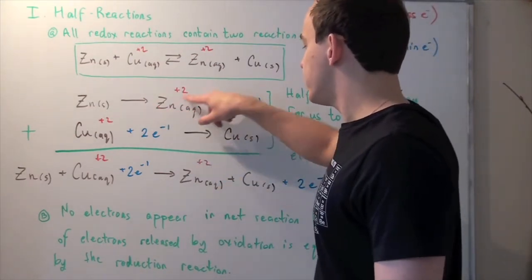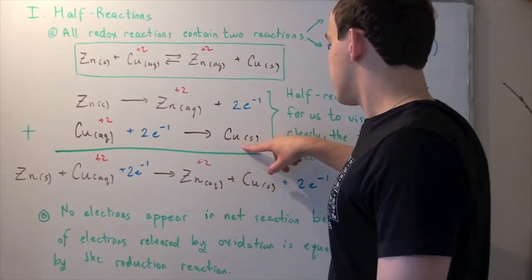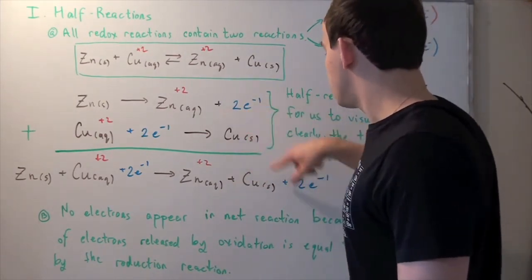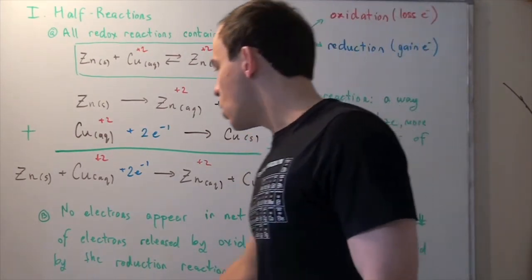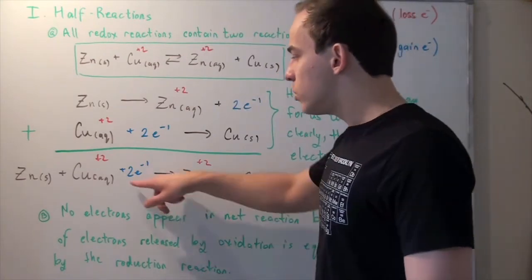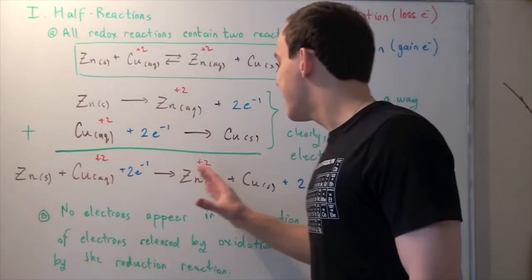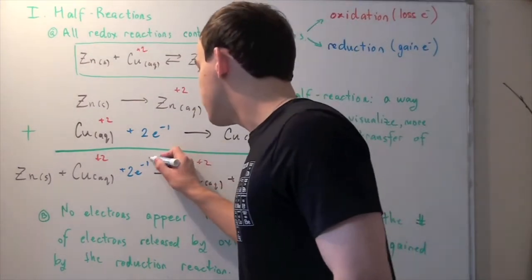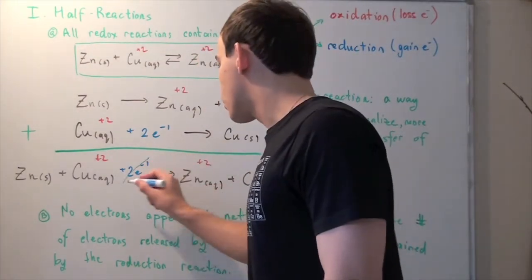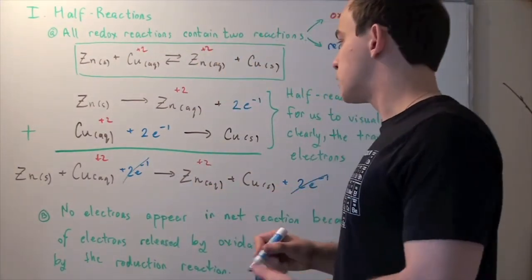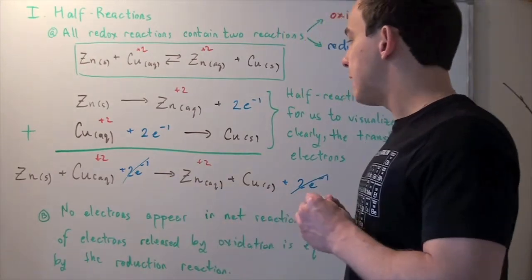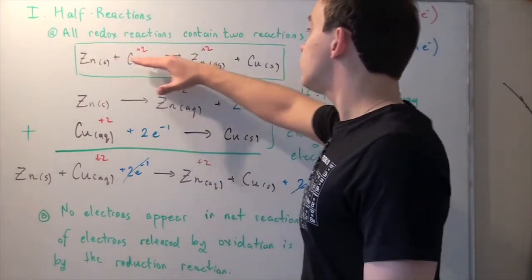So aqueous zinc plus copper solid plus our two electrons. Now notice one thing, that two electrons appear on this side and on this side. And that means by using simple algebra we just cross these guys out, we subtract 2e⁻. And what we get is our final net reaction.